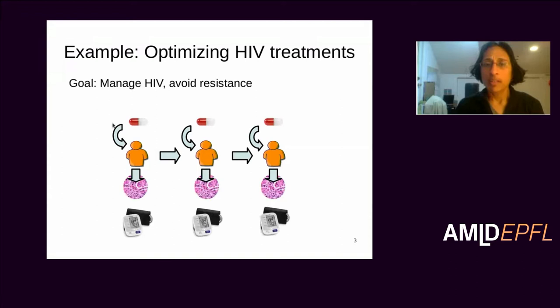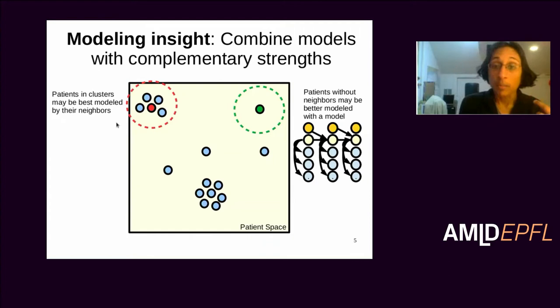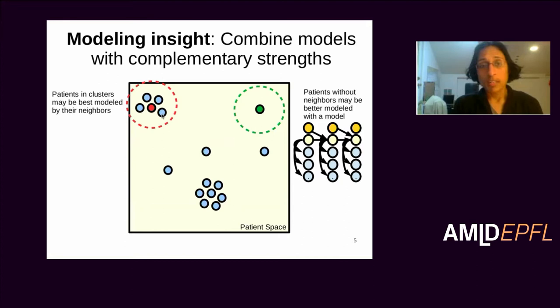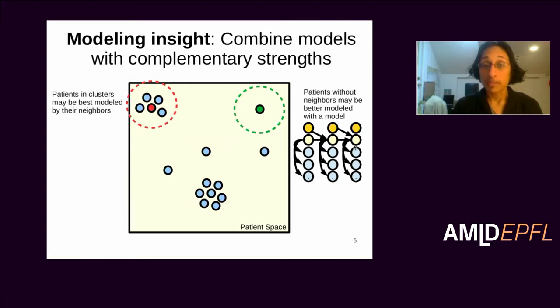For this particular example, we had an interesting insight: perhaps it's not useful to pick exactly one model. Maybe there are multiple alternatives that work better for different types of patients. The core insight was that many patients lie in clusters — they're lucky enough to have patients that are very similar to them. If you have a twin, look at what happened to all of your twins for different treatment options and see which one works best. On the other hand, if you're unlucky and don't have any neighbors nearby, it may be better to fall back on a parametric model of disease progression.